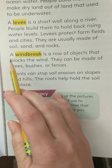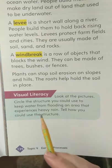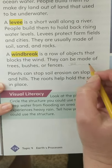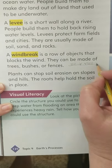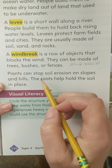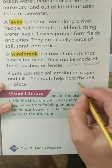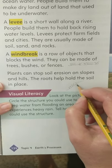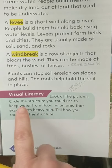A windbreak is a row of objects that blocks the wind. They can be made of trees, bushes, or fences. Often along the shores of a beach you can see fences and bushes planted to block the wind. You can also use trees and bushes to block it. Plants can also stop soil erosion on slopes and hills — the roots help to hold the soil in place. So if you have a hill and you don't want all that dirt to come rolling down, put lots of plants along the hill.